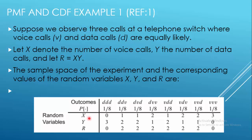Here X denotes the voice calls. If all three calls are data, there is no voice call. We can have one voice call, two voice calls, or three voice calls. Similarly, Y counts the data calls — two data calls in some cases — and R is simply the multiplication of X and Y.